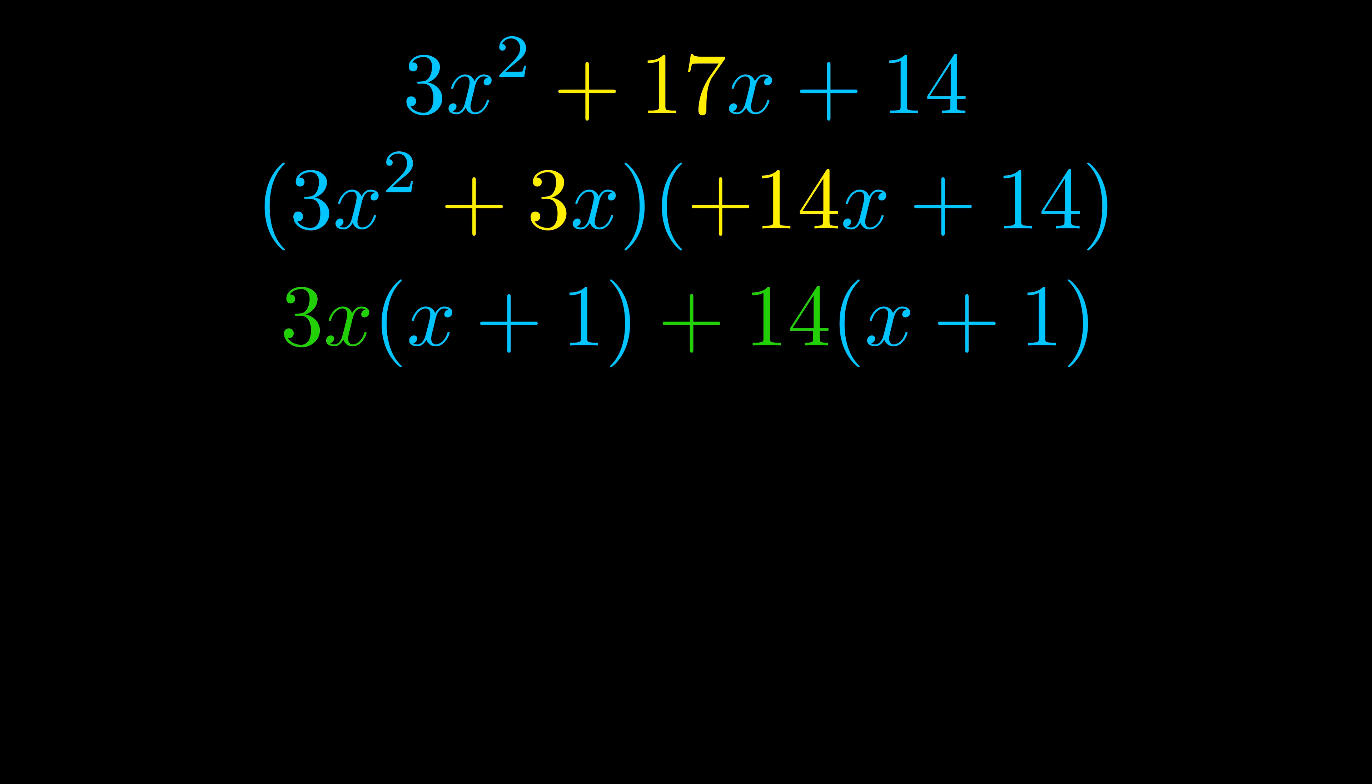Notice also how what remains inside of the parentheses is the same in both cases. The blue values are the same. Those blue values will become one of our factors and we will combine the two green values, the GCFs that we pulled out, to get the other one. And that is our fully factored equation.